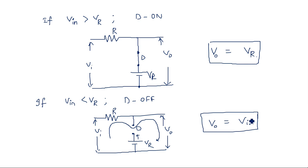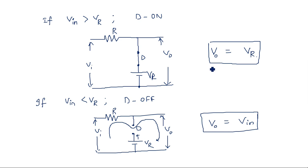Keep this point in mind: the diode clipping actions are completely dependent on the state of the diode — whether it is ON or OFF. Depending on whether the diode is forward biased or reverse biased, the output is yielded accordingly.